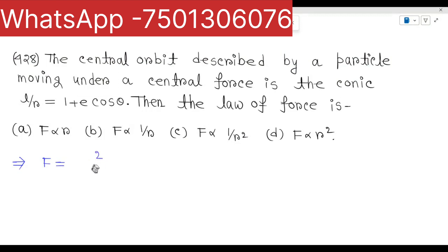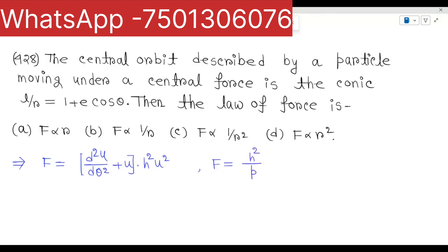F proportional to r. Using the Binet equation: d²u/dθ² + u, plus u times h²u² — hence h² times d²u/dθ² plus h²u, which equals h²u. This formula is used to turn the curve over with polar coordinates.